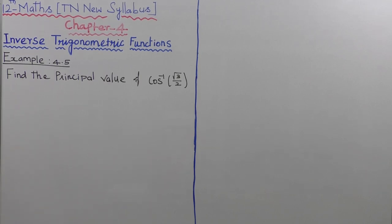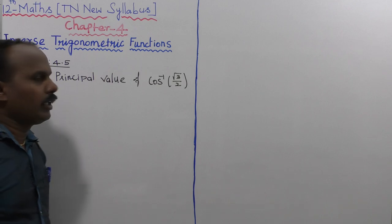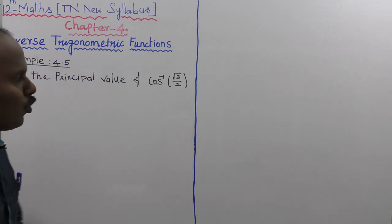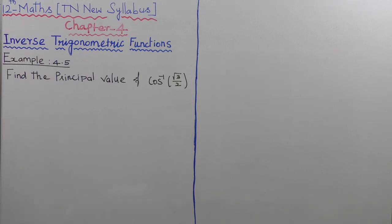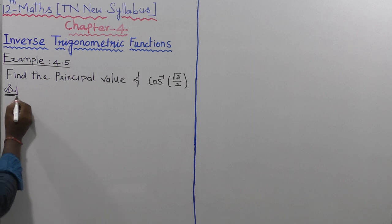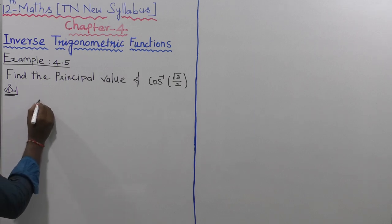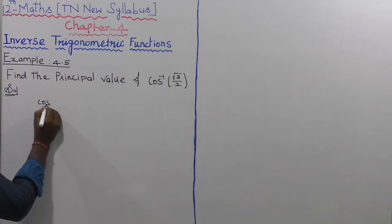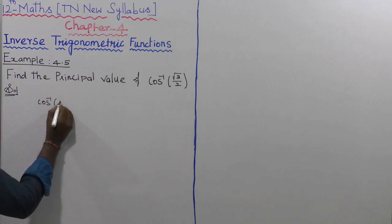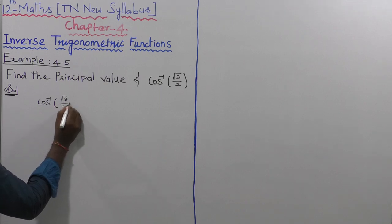Example 4.5. Find the principal value of cos inverse of root 3 divided by 2. The given value is cos inverse of root 3 divided by 2.